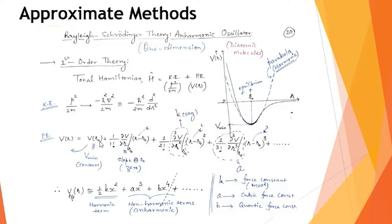The Taylor expansion gives V(r) = V(r₀) + (∂V/∂r)(r−r₀) + higher-order terms including quadratic, cubic, and quartic terms. Since V(r₀) is a constant, we define an effective potential V_eff = V(r) − V(r₀). At r = r₀ the slope ∂V/∂r is zero because the potential is at its minimum, so the linear term vanishes.